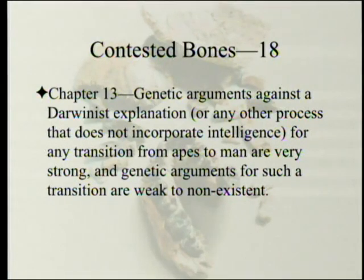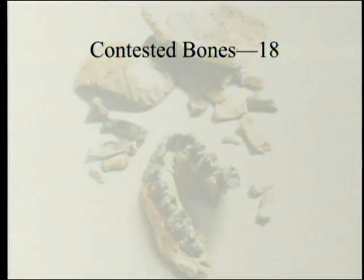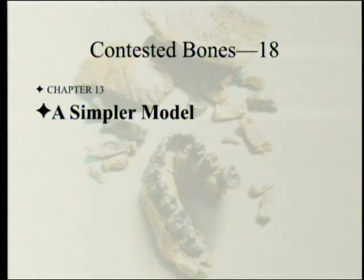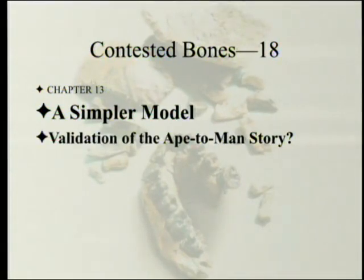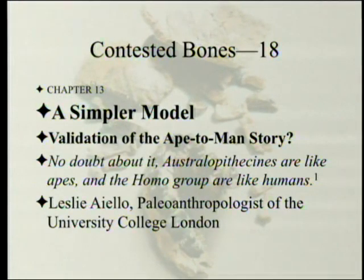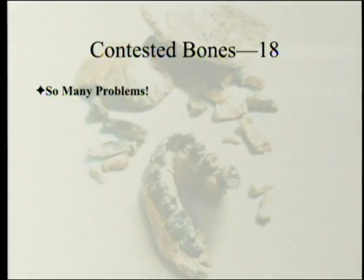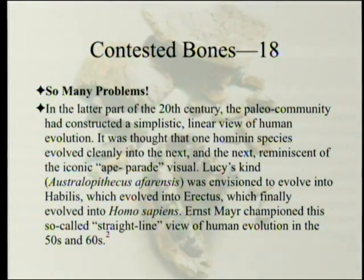Two weeks ago we saw the disappearance of the argument for chromosome 2 being a fusion of two ape chromosomes. In chapter 13, they give what they call a simpler model, with the subtitle 'Validation of the Ape to Man Story.' Leslie Aiello states: 'No doubt about it — Australopithecines are like apes, and the Homo group are like humans.' The chapter starts out: so many problems. In the latter part of the 20th century, the paleo community had constructed a simplistic, linear view of human evolution.